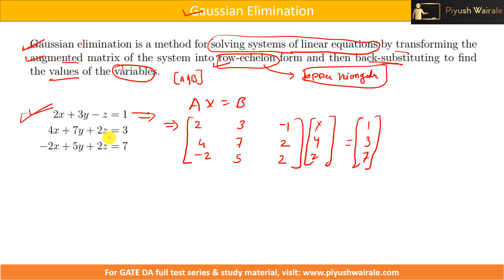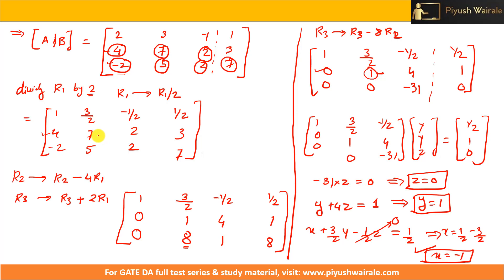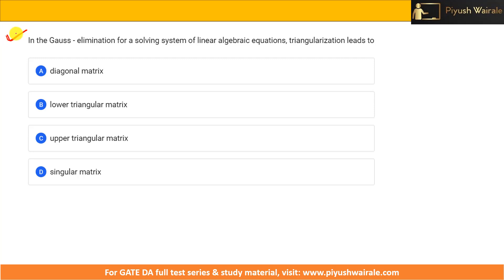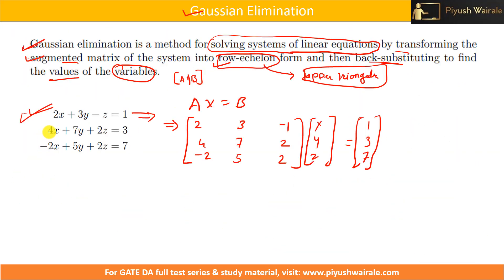This is how we apply the Gaussian elimination method to find the solution of a system of linear equations. There is one question from a previous GATE exam: in Gaussian elimination for solving a system of linear algebraic equations, triangularization leads to which type of matrix? The correct answer is option C — upper triangular matrix. For such questions, you can also verify by substituting values from the options into the equations.